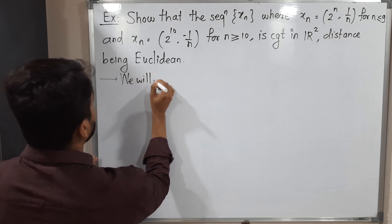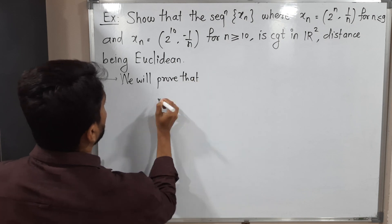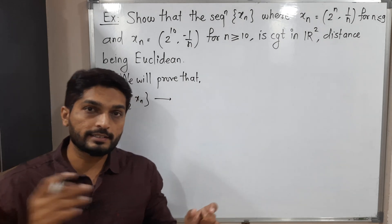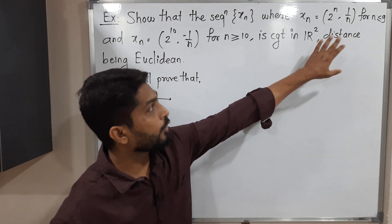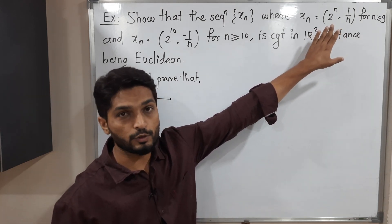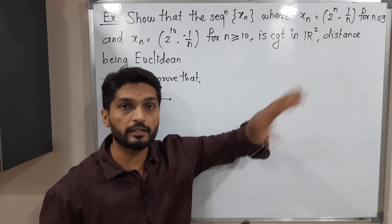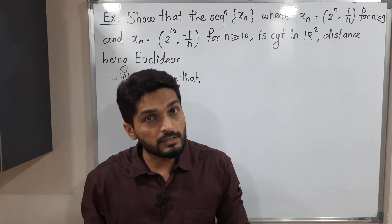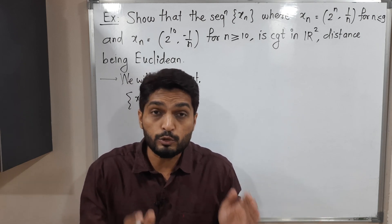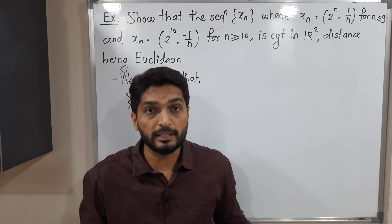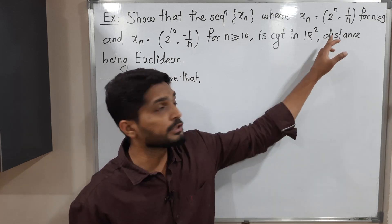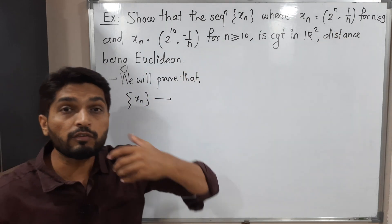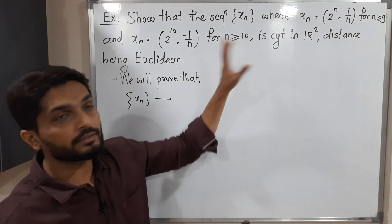We will prove that the sequence xn converges. For the first nine terms xn is defined by the first formula, and the remaining infinitely many terms are defined by the second formula. The limit of a sequence is not decided by the first finite terms — it is decided by the remaining infinitely many terms. So we will not give much importance to the first definition; our main focus is on the second definition, since it is true for all n greater than or equal to 10.